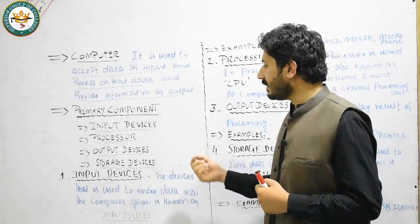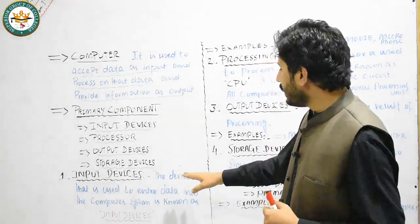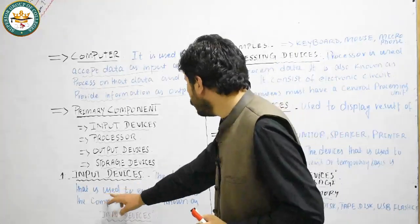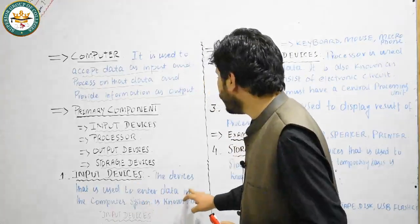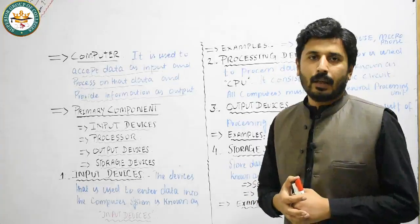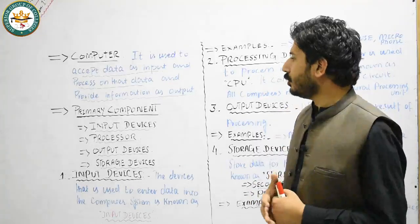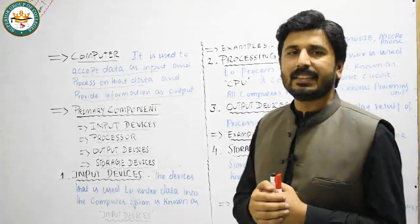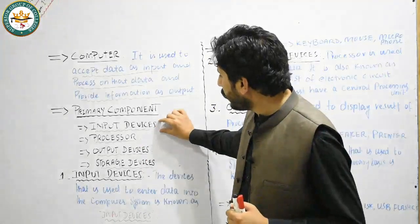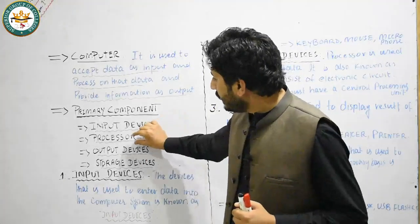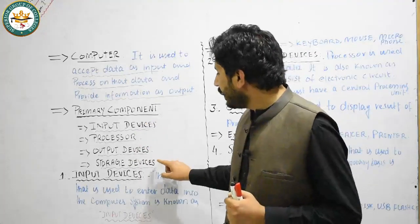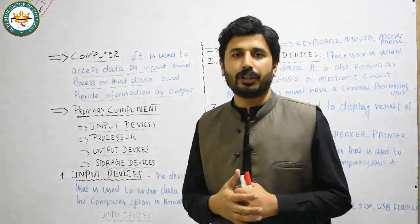Input devices are the devices that are used to enter data into the computer system, and they are known as input devices. Our primary components are basically four: the first component is input devices, the second is processor, the third is output devices, and the last one is storage devices.